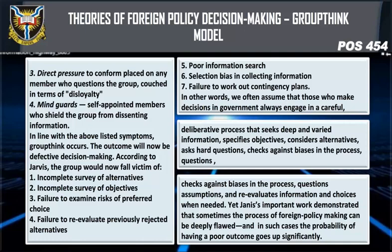When groupthink occurs, the outcome will be defective decision-making. According to Janis, the group will fall victim to: incomplete survey of alternatives, incomplete survey of objectives, failure to examine risks of the preferred choice, failure to re-evaluate previously rejected alternatives, poor information search, selection bias in collecting information, and failure to work out contingency plans.